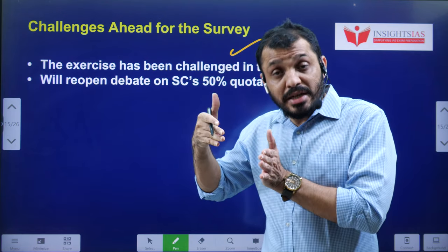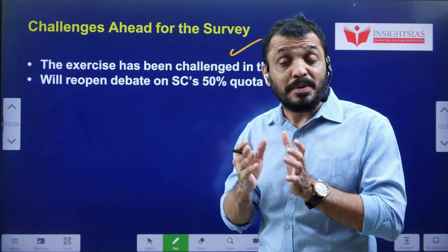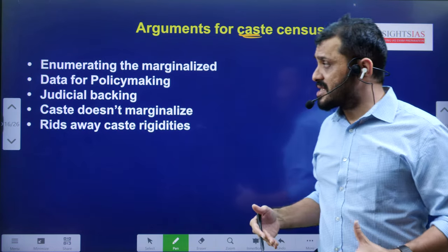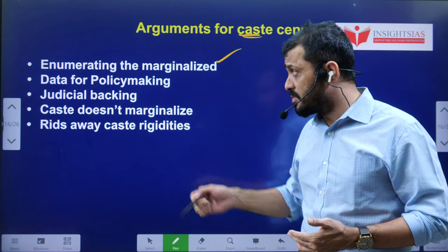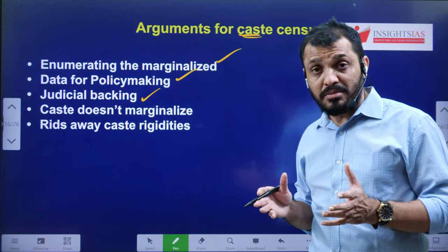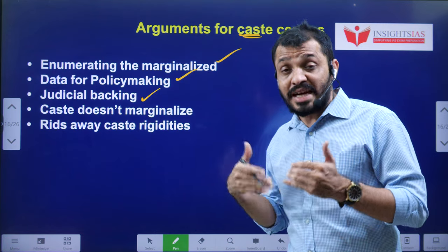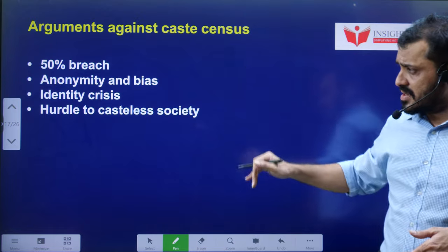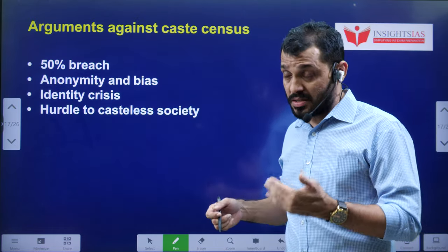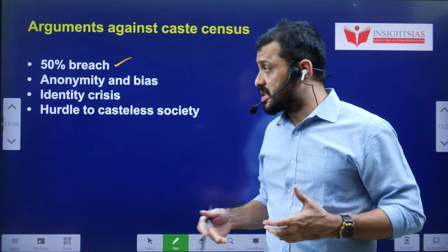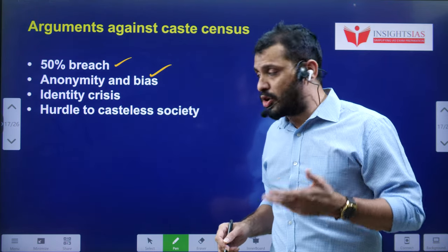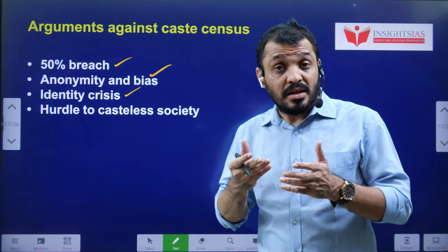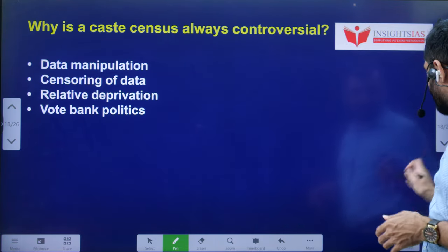In terms of class, you can consider certain groups of people as a separate group — this was an interpretation of Article 14. Arguments in favor of caste census: it provides data about marginalized people, aids policy-making, and has judicial backing since courts have mentioned the need for adequate representation reinforced through data; it can also loosen caste rigidities. Arguments against: it may raise demands for breaching the 50% reservation ceiling, data privacy may be compromised, anonymity will be affected, and rather than diluting caste identity, it may actually promote caste identity.